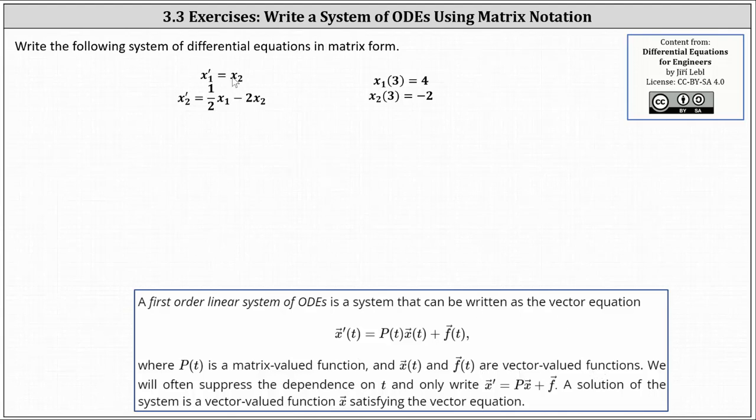Notice how there is no x one variable on the right side of the equation x one prime. It might be helpful to rewrite that first equation as x one prime equals zero x one plus x two, and then because the second equation already has x one and x two in it, leave the second equation unchanged.